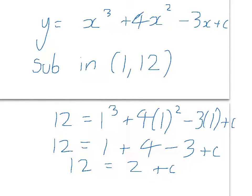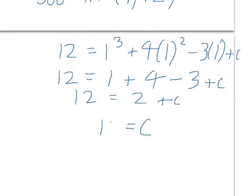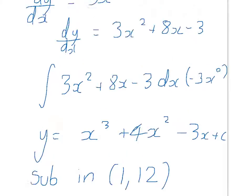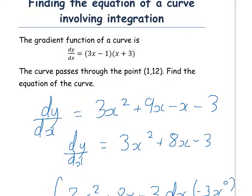That means c is equal to 10. Therefore, y equals x cubed plus 4x squared minus 3x plus 10. And that is our equation of the curve, given that dy/dx equals (3x - 1)(x + 3). This is quite a common question to be asked in a Core 1 exam.